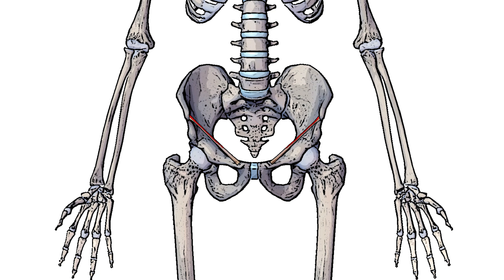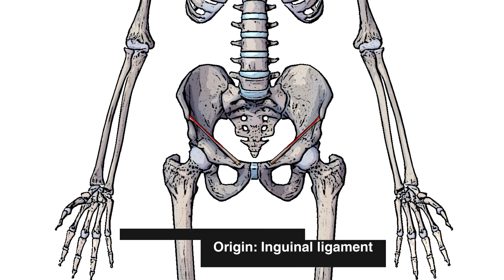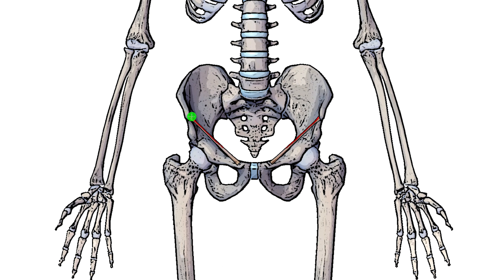Our next point of origin is the inguinal ligament. The inguinal ligament connects onto the anterior superior iliac spine and then comes down and connects onto the pubic tubercle. The portion where the transversus abdominus connects, marked out here in red, is the superior three quarters of the inguinal ligament.